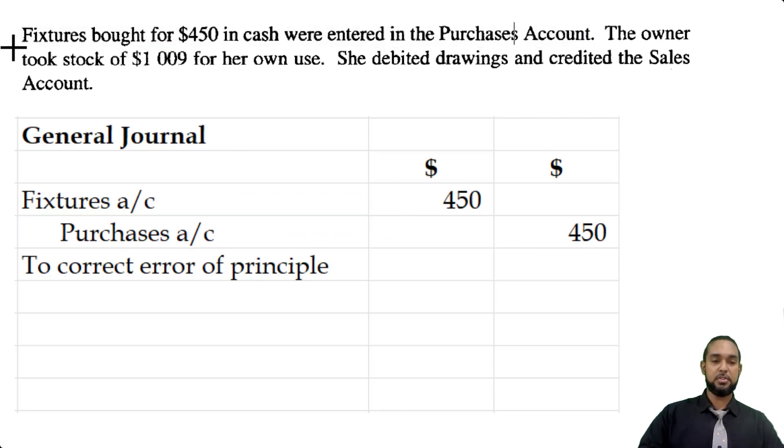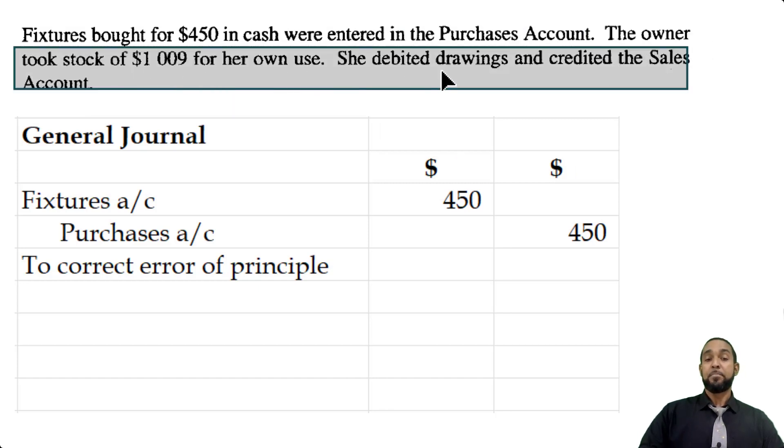Okay. The next error was that the owner took stock of $1,009 for her own use. She debited drawings and credited sales. OK. She shouldn't have credited sales. Anytime the owner takes anything for his or her personal use, that's drawings, that'll be debited. So that half of the transaction was entered correctly. The credit should have gone to purchases. Why? Because when you take out stock, it's no longer available for sale.